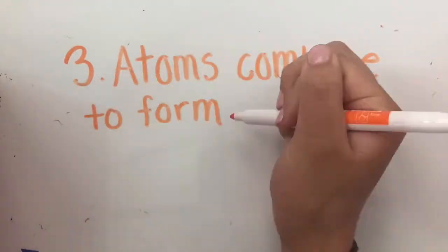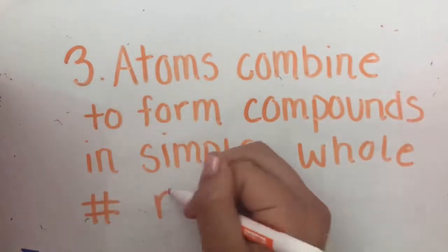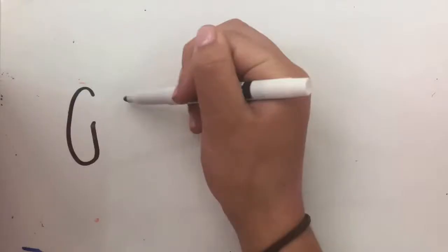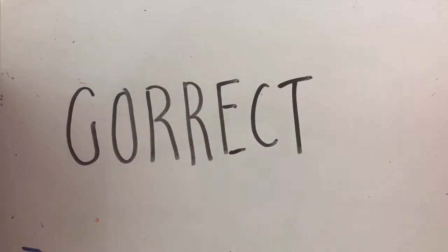Atoms combine to form compounds in simple whole number ratios. This is correct because you cannot have half of an atom in a compound, allowing for only whole number ratios.